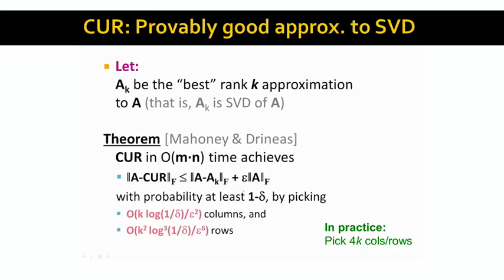So the question is: how does CUR correspond to SVD, and is CUR decomposition doing anything useful for us? Let's assume that A_K is the best rank-K approximation to our input matrix A. We compute it using SVD — we take matrix A, do the singular value decomposition, take the first K large singular values, set the rest to zero, and multiply the three matrices together to obtain A_K. Best here means in terms of the Frobenius norm, so that ||A − A_K|| in Frobenius norm is as small as possible. What Mahoney and Drineas proved is a theorem that connects the quality of the CUR approximation to that of the SVD approximation.